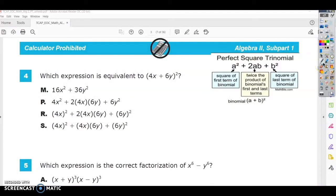All right, so this is the Algebra 2 practice test number 4, and it says which expression is equivalent to the quantity of 4x plus 6y squared.